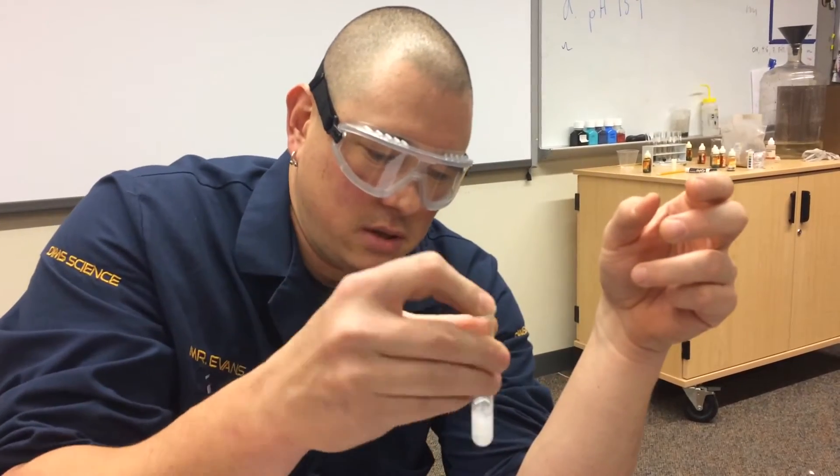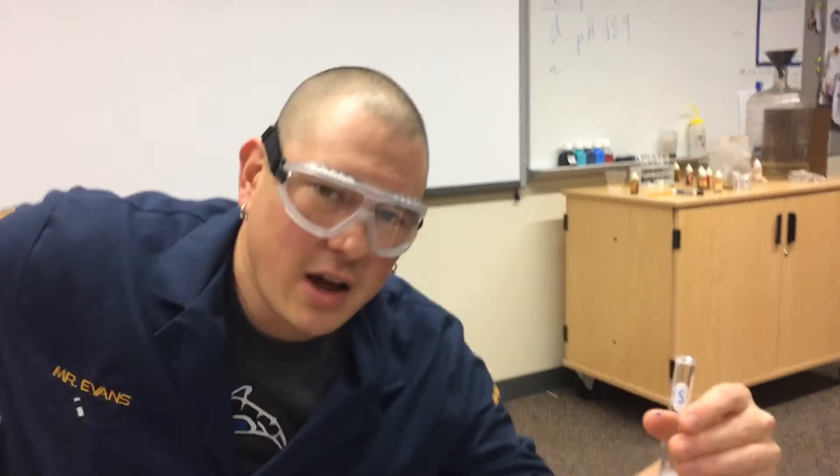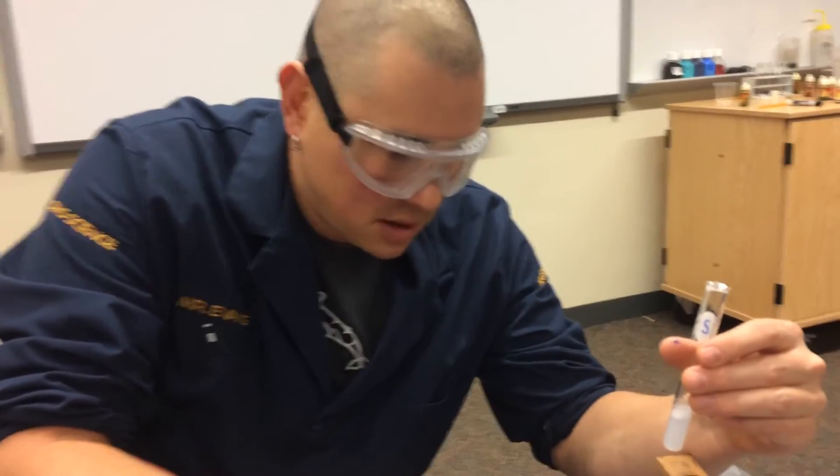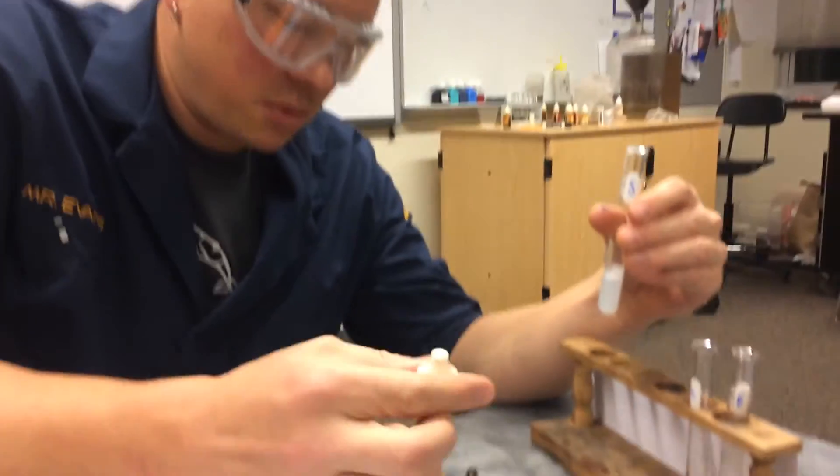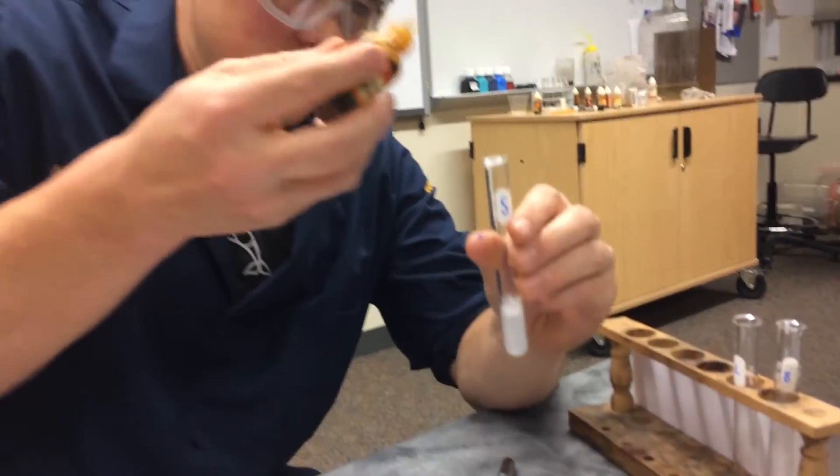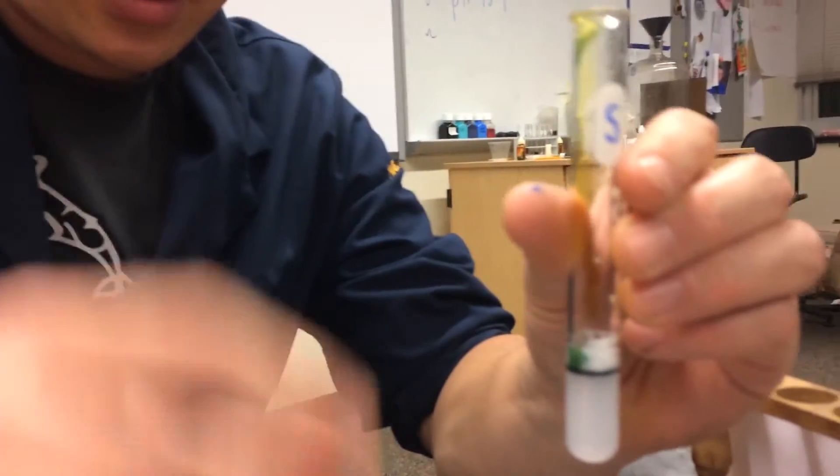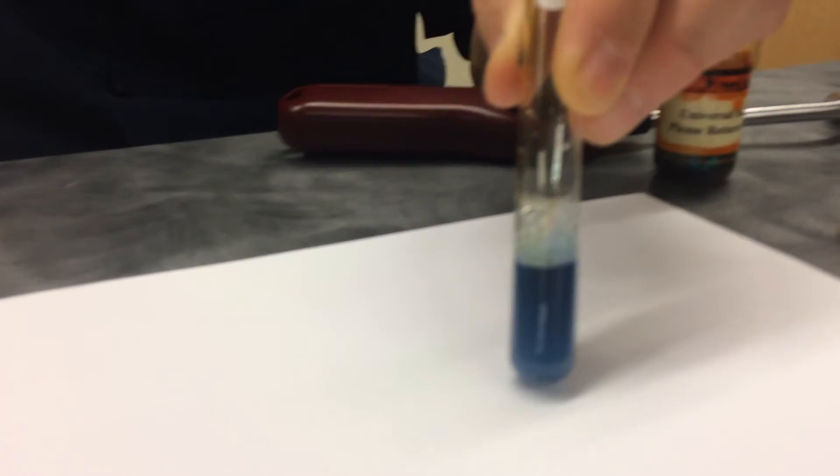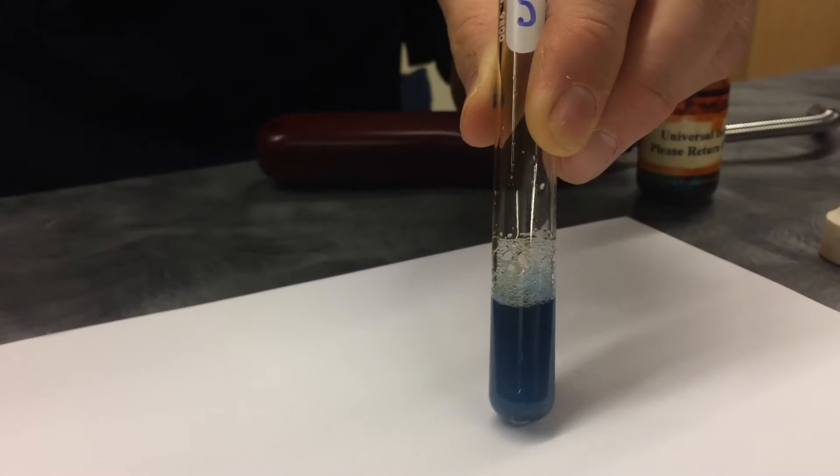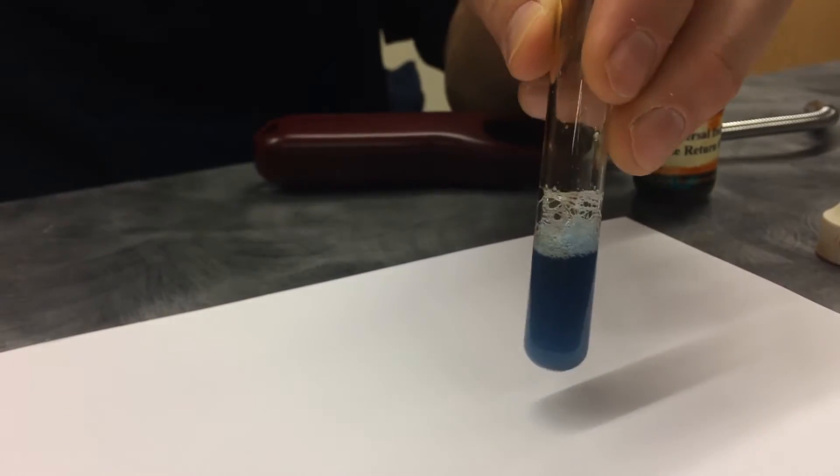Shake it up a little. Okay, hopefully you have your prediction. Now I'm going to put a drop or two in here. Let's see what happens. Look at that. I like that. It is definitely kind of a darkish blue. So write down what it is. What pH do you think that is?